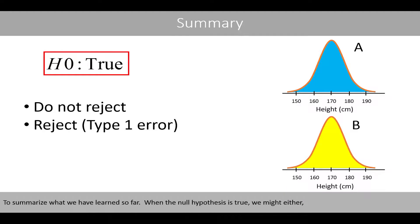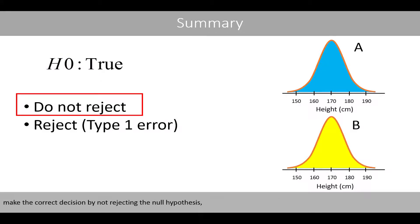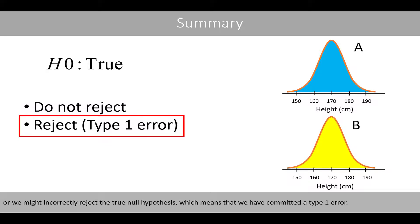To summarize what we have learned so far: when the null hypothesis is true, we might either make the correct decision by not rejecting the null hypothesis, or we might incorrectly reject the true null hypothesis, which means that we have committed a type 1 error.